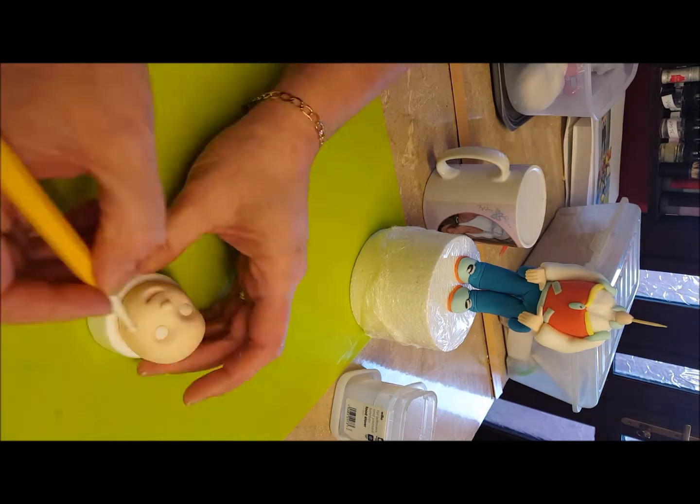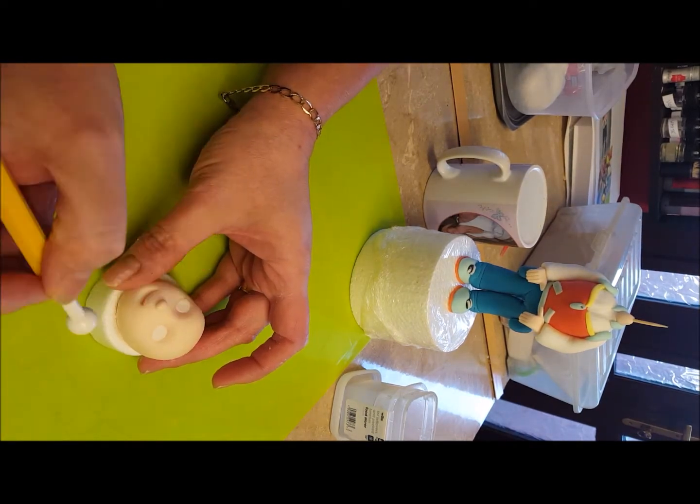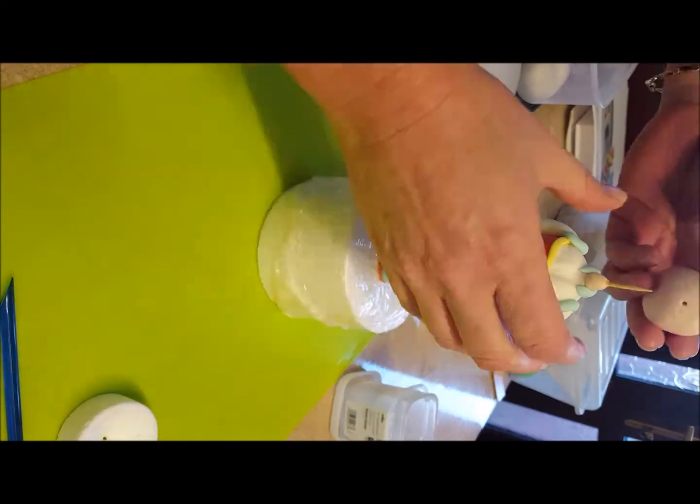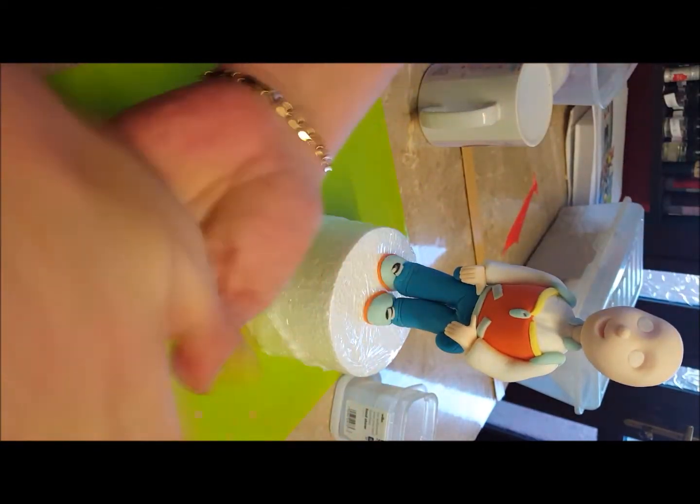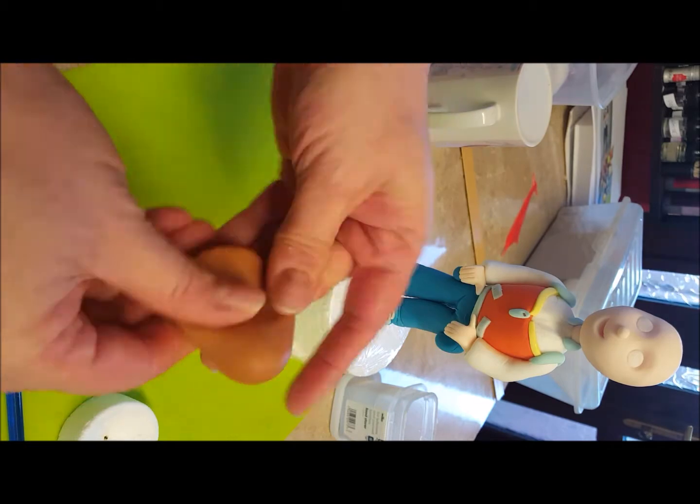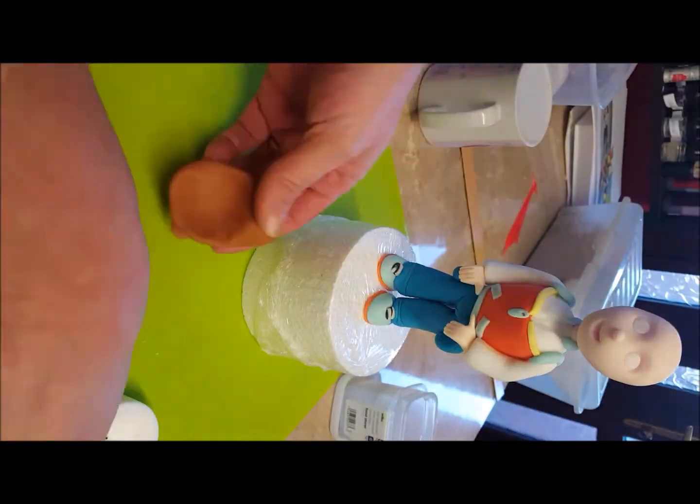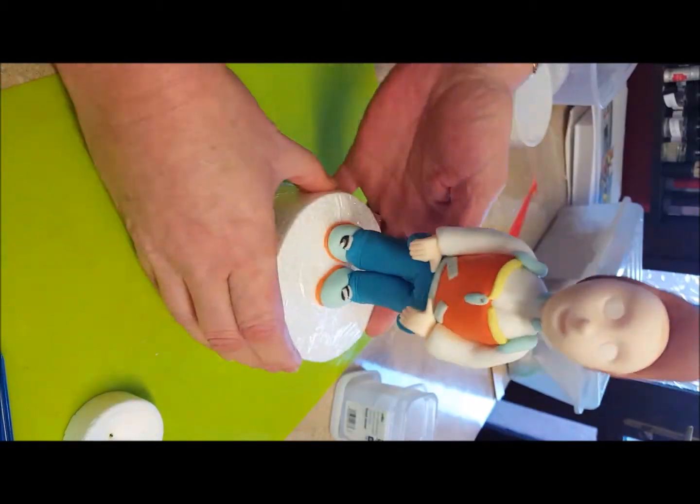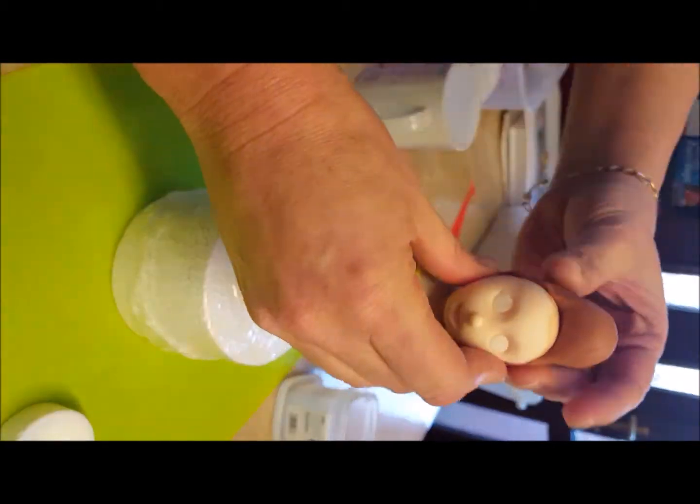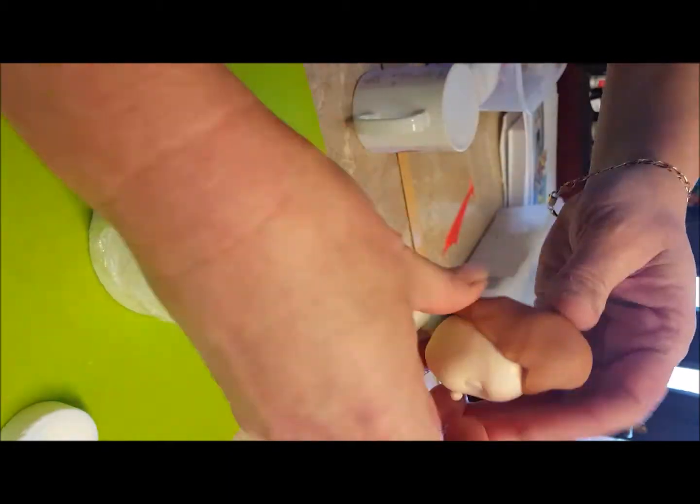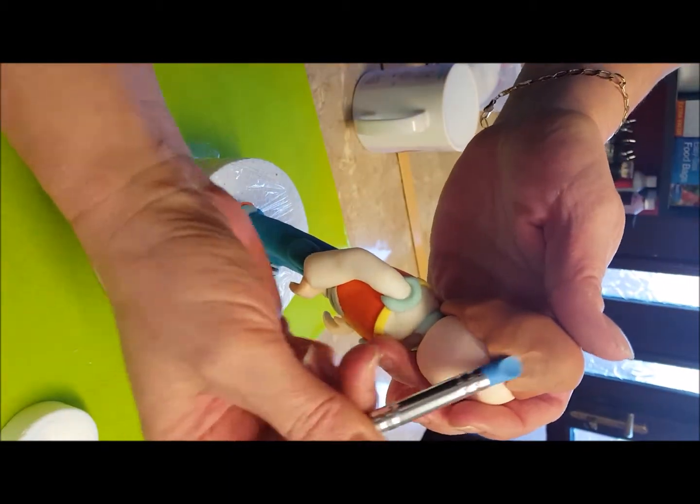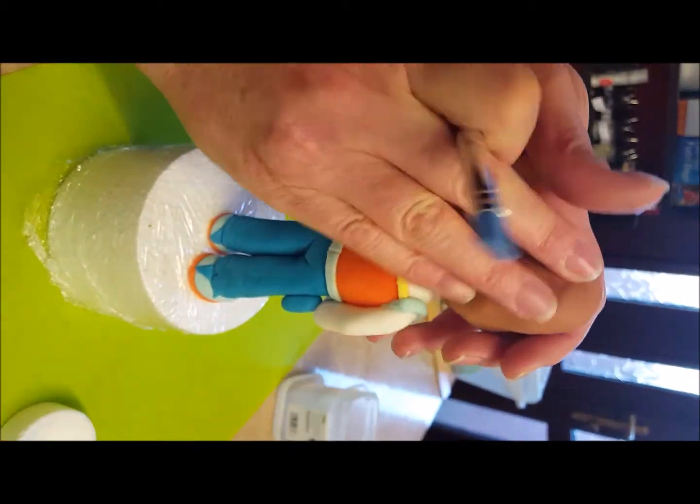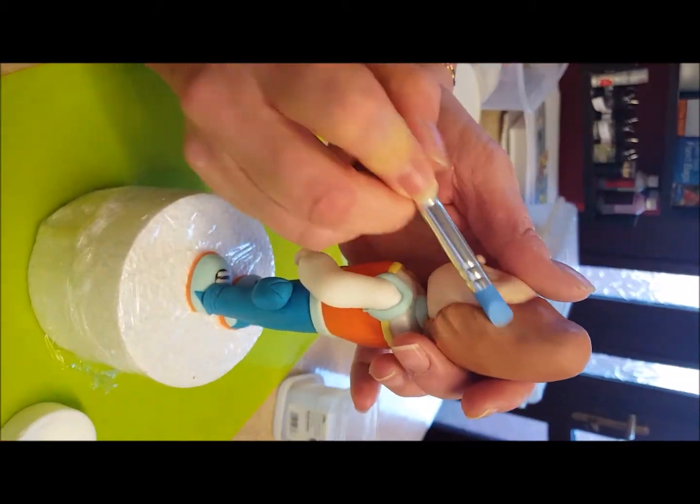Next stick some white in the eyes. Add the head to the body. And then get some brown, flatten out the bottom part but leave the top part, and just stick that to the head. Flatten it slightly at the front, and just use your modeling tool to put it around the head and make sure it's all stuck.